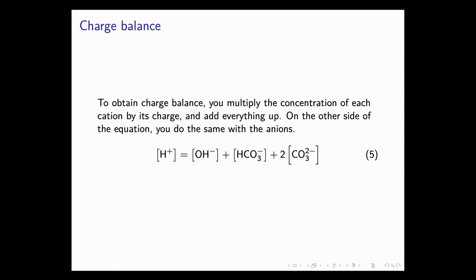How do we get the charge balance equation? Well, it's quite simple, actually. To obtain the balance equation, you multiply the concentration of every cation by its charge. Here, the only cation is H+, and the charge is one. So there's a one coefficient right here that I've omitted, because typically we don't write one coefficients explicitly. And on the other side of the equation, you do the same thing for the anions. We're going to have OH- ions with a one minus charge. We're going to have bicarbonate ions with a one minus charge, and we have carbonate ions. And because it has a two minus charge, this gets a coefficient of two.